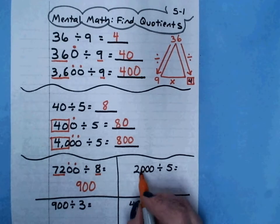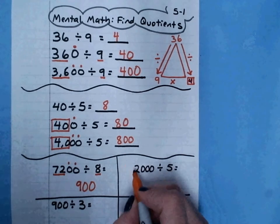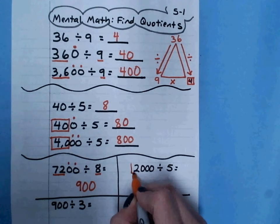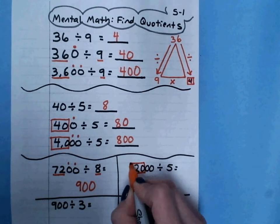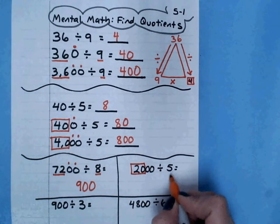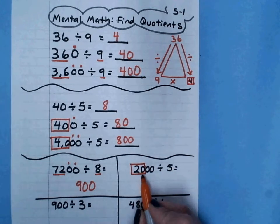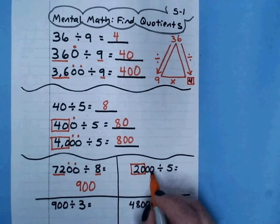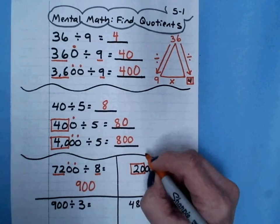Here's another example, 2,000 divided by 5. You want to be careful because this basic fact is 20 divided by 5. And the 20 ends in a 0. But 20 divided by 5 is 4.